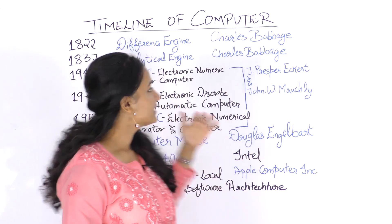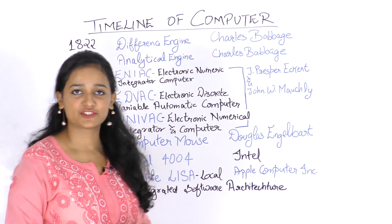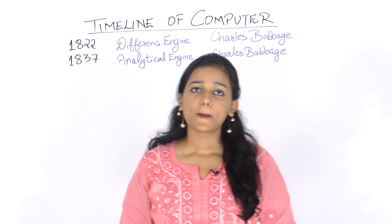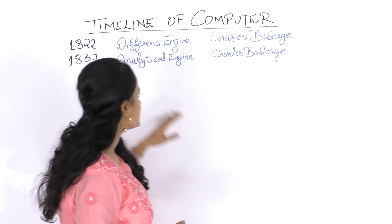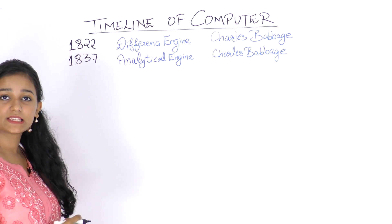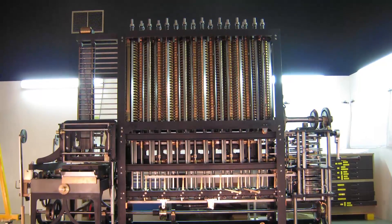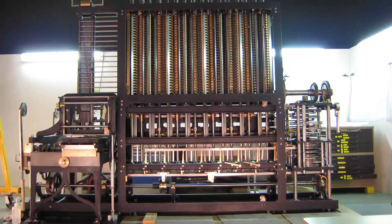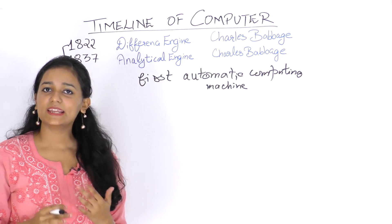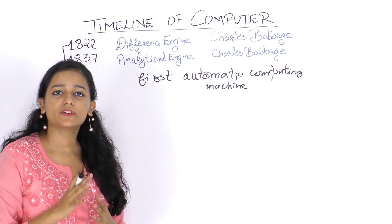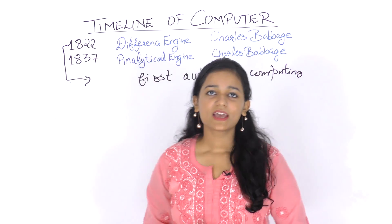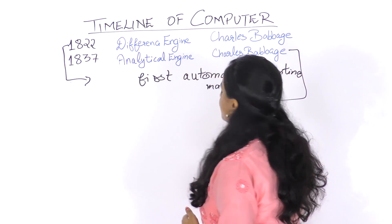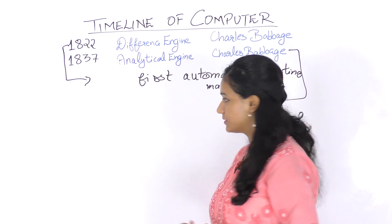Let us study this timeline in detail. In 1822, Charles Babbage began conceptualizing the Difference Engine, which is considered the first automatic computing machine. Then in 1837, he worked on the Analytical Engine, which was the first general purpose computer.